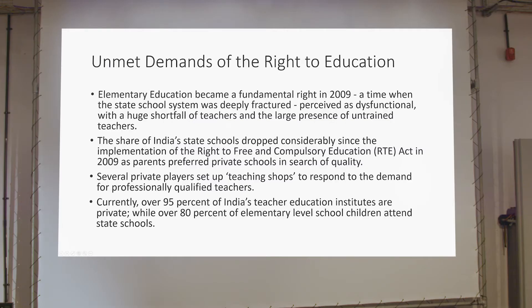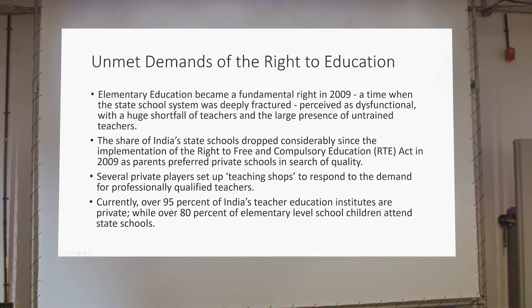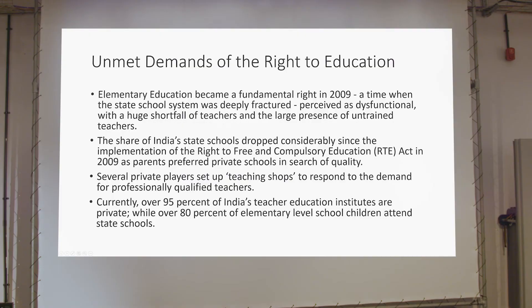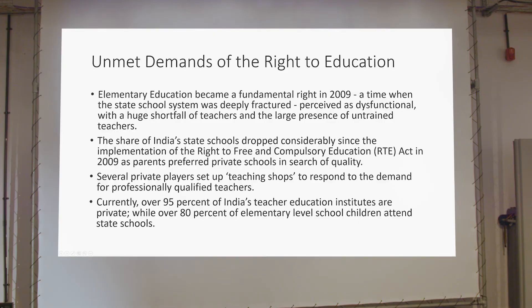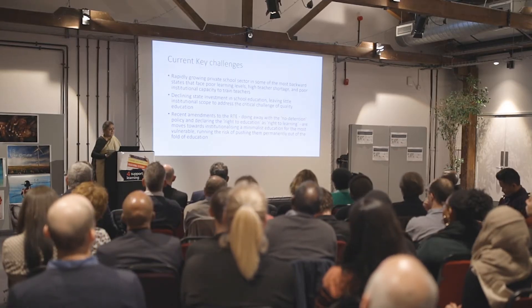The Right to Education — which covers elementary level from class one to class eight — came in 2009, but it came at a time when our system was already deeply fractured. The right to education came when we didn't have much to offer: a perceived dysfunctional shortfall of teachers, a large presence of untrained teachers, and a movement to private schools. India's state schools actually have fewer children now comparatively, even though we're still a very large system. Several private players came into teacher education as well, with very little understanding of education, leading to teaching shops. Currently 95 percent of India's teacher training institutes are in the private sector, while 80 percent of children are still in the state sector of schooling.